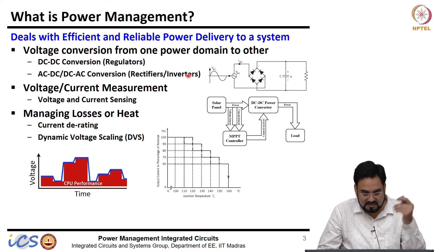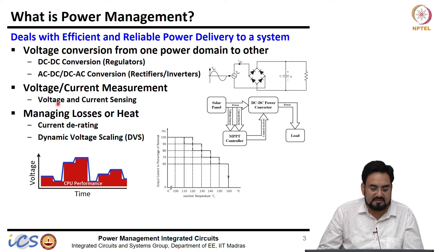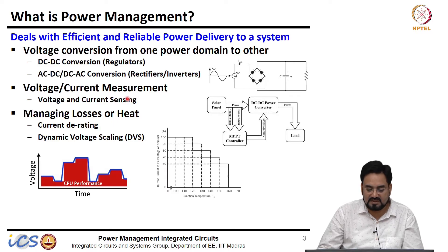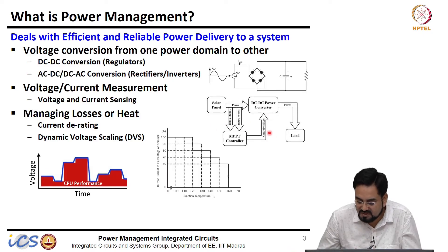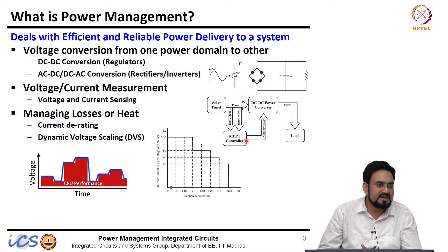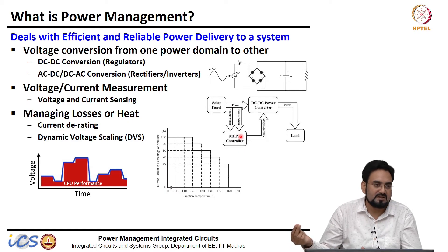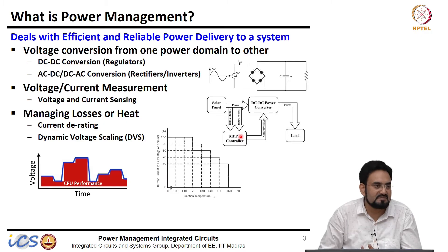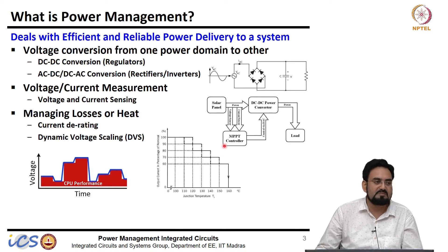Power management may also be associated with voltage and current measurement. One example is solar energy harvesting from a solar panel, which mostly requires something called MPPT — maximum power point tracking. You need to measure the power, and in order to calculate power you have to sense both voltage and current, since power is the product of voltage and current. We need to measure both in order to operate at the maximum power point.